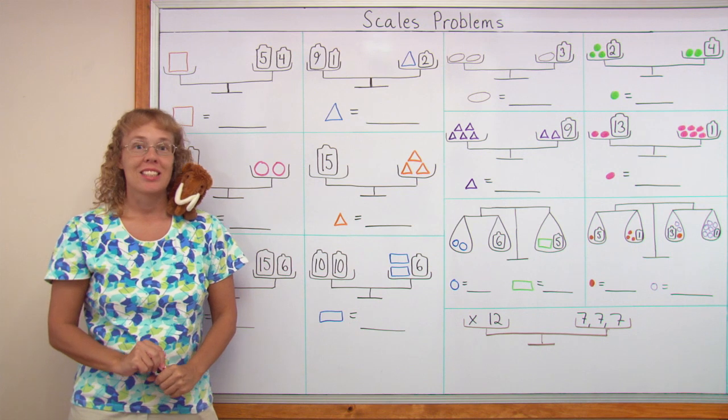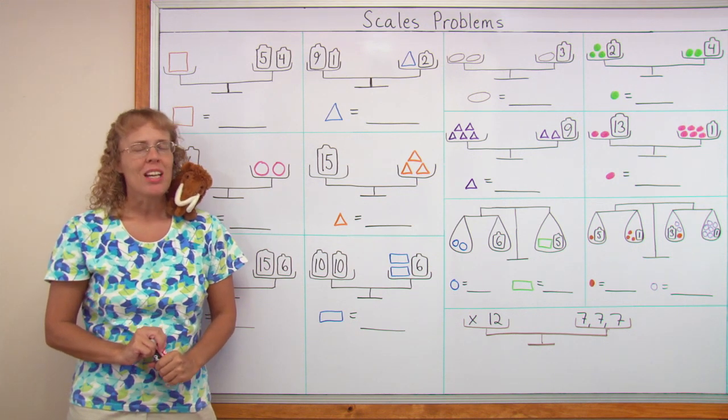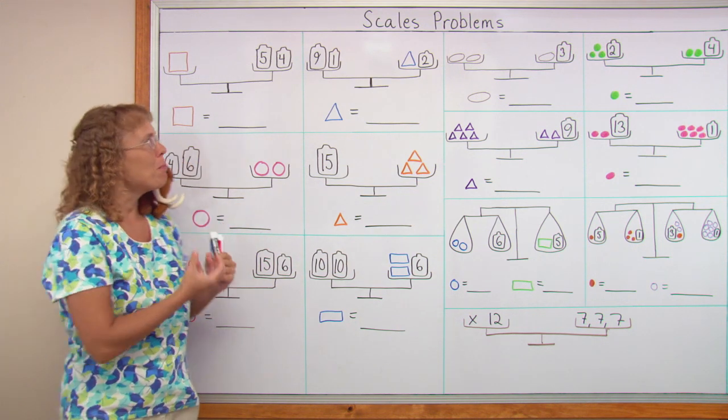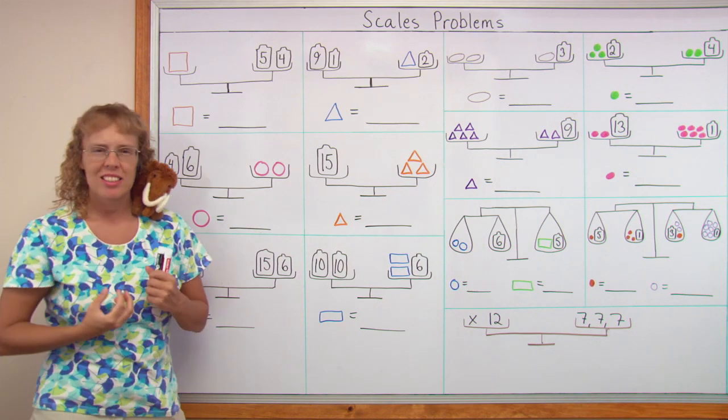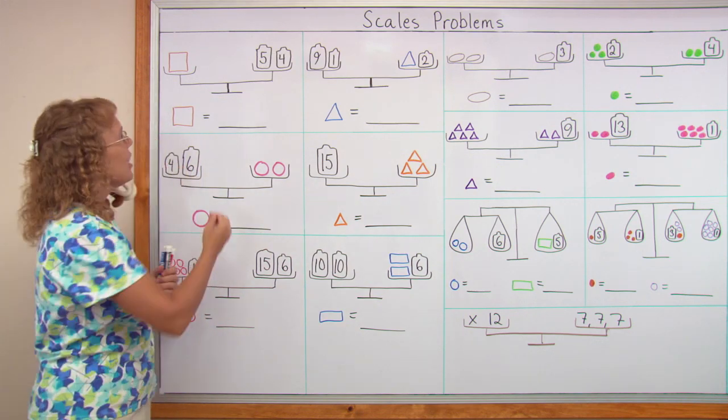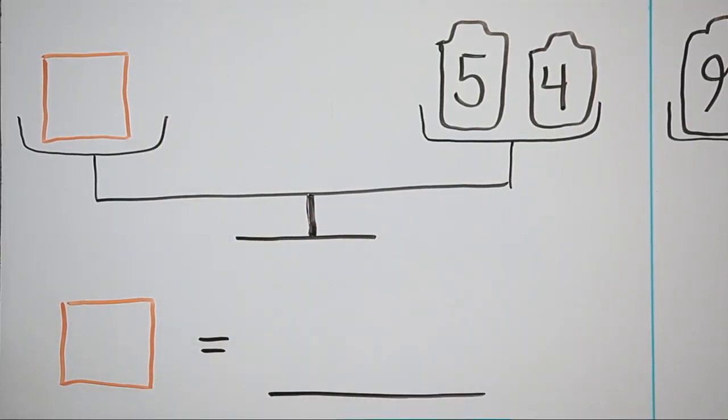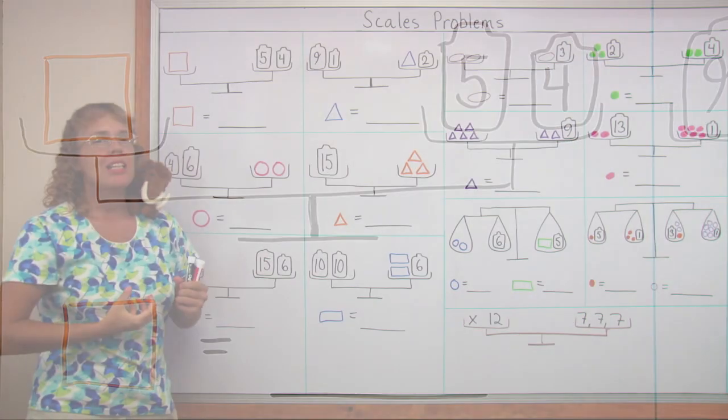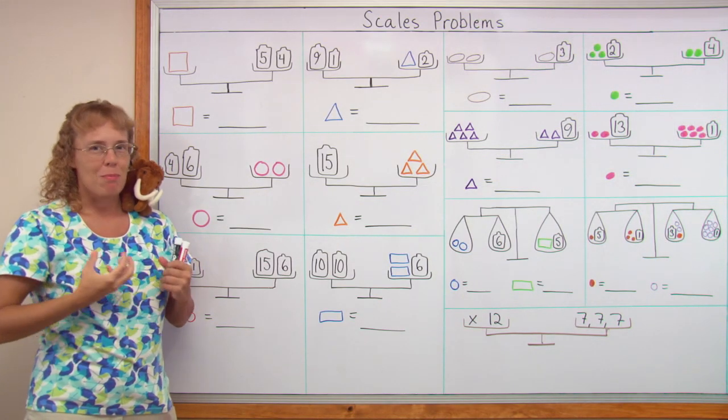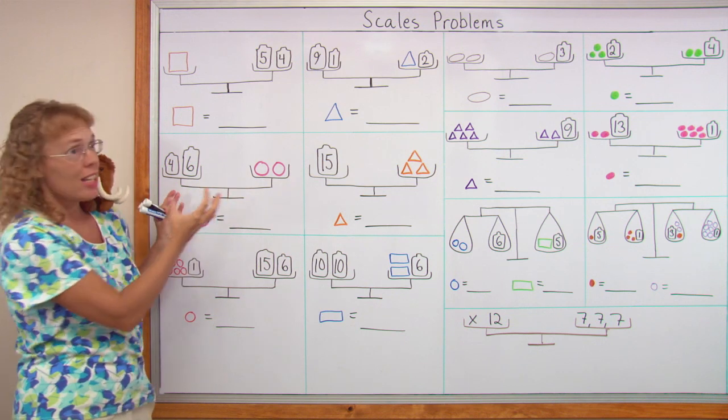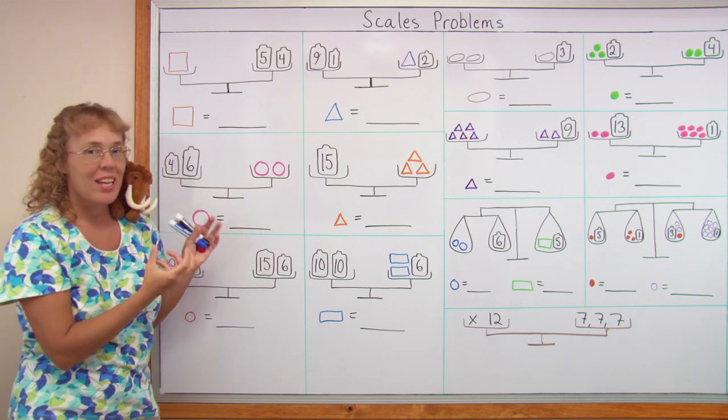In this lesson we are studying some scales problems, or problems where we have a pan balance. It is like a seesaw, you know a seesaw? It can tilt one way or the other if one side is heavier. But in all these problems we are imagining that the two sides are equal. They have the same weight, so to speak.